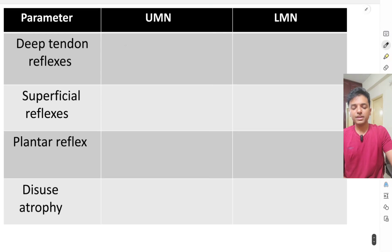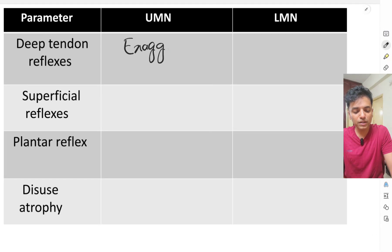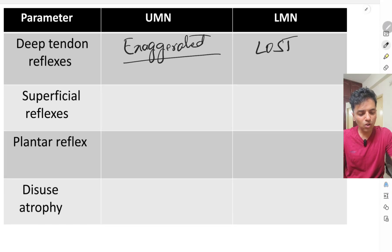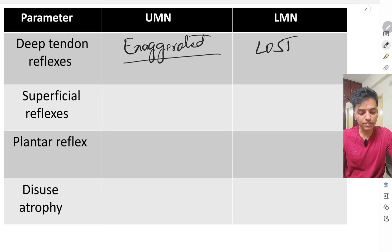Fifth, the deep tendon reflexes. In upper motor neuron lesion, the deep tendon reflexes are exaggerated — whether it's the knee jerk, ankle jerk, or biceps jerk, all are exaggerated. In lower motor neuron lesion, all these reflexes are lost.